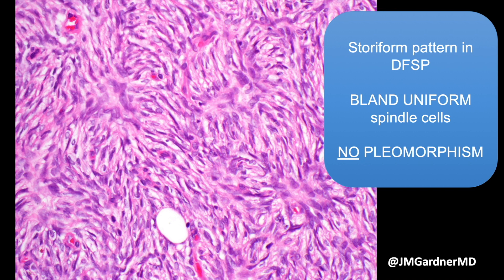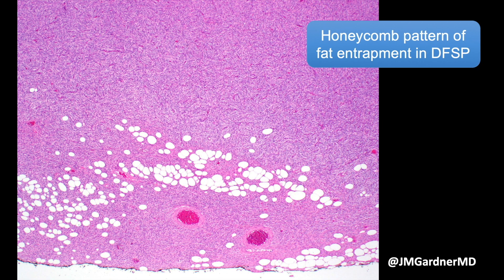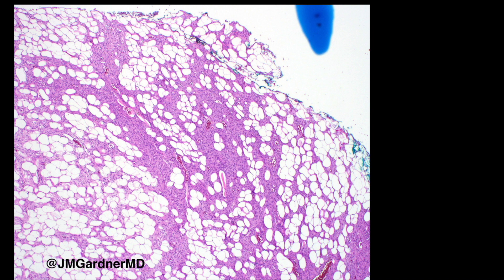The storiform pattern — this beautiful swirly, whirly growth — is very visually distinctive, but you really have to see it. Some DFSPs have it and some don't, and other lesions like dermatofibromas can also show storiform patterns, so it alone is not enough. What we really want to see with DFSP is those bland swirly spindle cells infiltrating and entrapping adipose tissue in a so-called honeycomb pattern: islands of fat trapped in the midst of the tumor, tightly wrapped by tumor — a very characteristic Swiss cheese or honeycomb appearance.